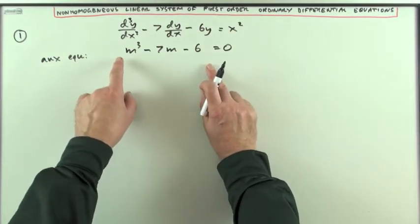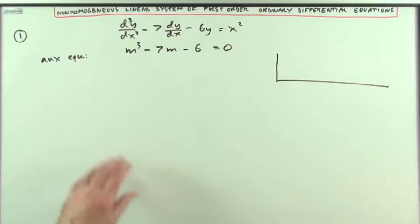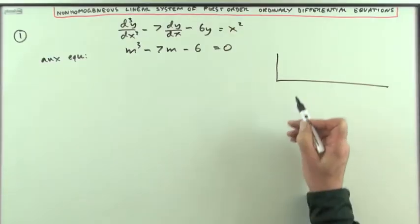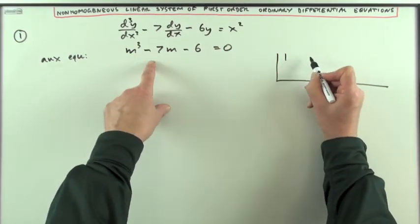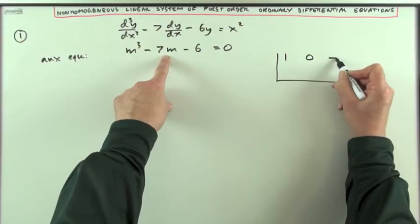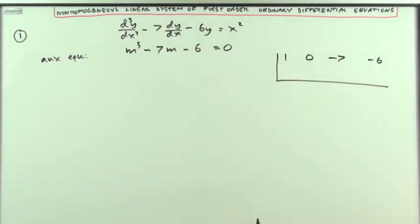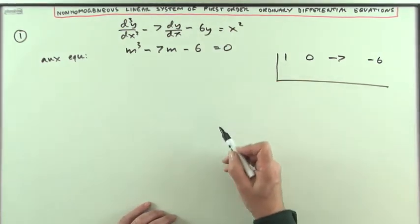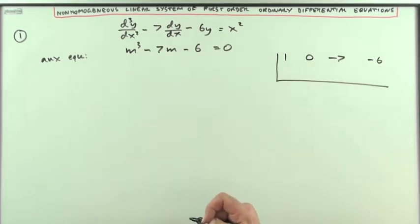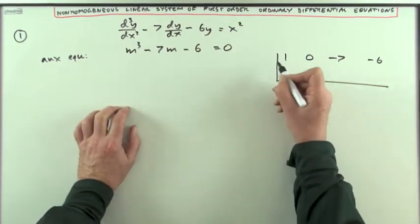Now factorizing this cubic expression, I'm going to use synthetic division, whereby I put down the coefficients of this cubic: 1 for the cube term, 0 for the squared term, negative 7 for the linear one, and negative 6 at the end for the constant. First of all, find any root that works. Negative 1 would give negative 1, plus 7, and negative 6, which gives 0 — so that's a root.